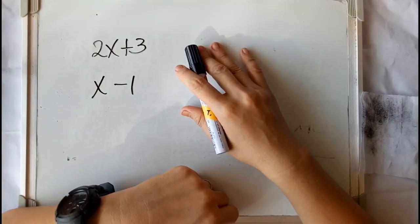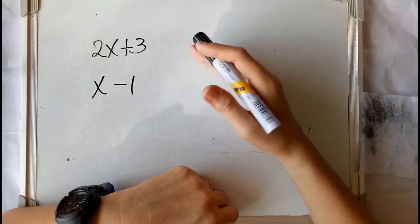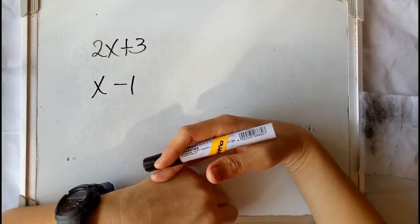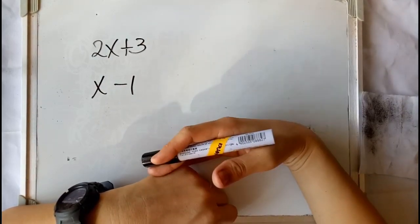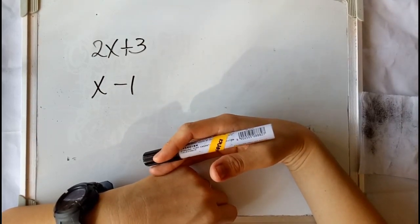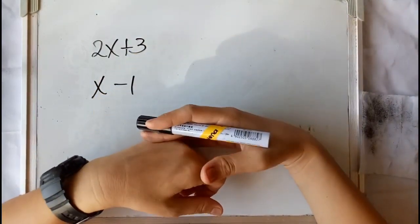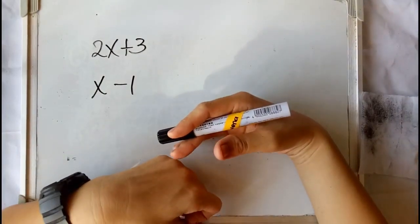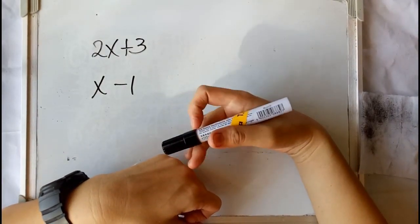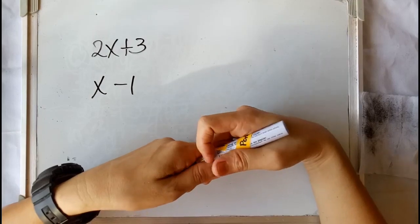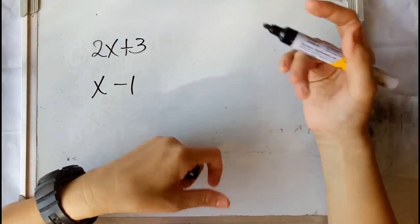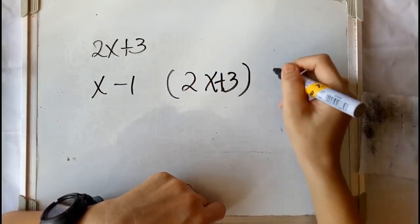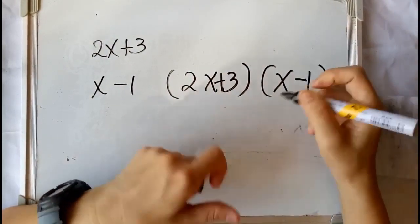What if polynomials have no common factors? For example, we have 2x plus 3 and x minus 1. We know that they are both prime. If there are no common factors in the given expressions — that is, the expressions are not factorable — all you need to do is find their product. Thus, the least common multiple is the product of (2x plus 3) and (x minus 1).